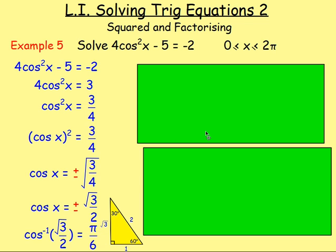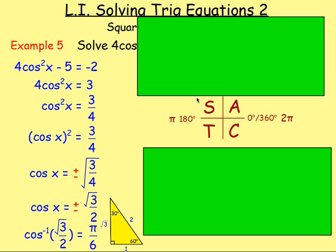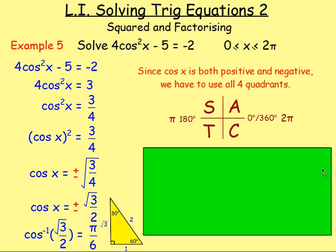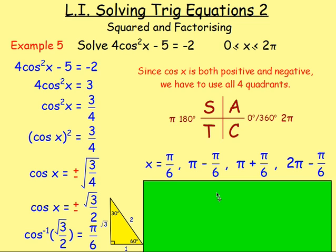After that, think about the quadrants. Because it's both the positive and the negative — positive would be A and C, negative would be S and T — so you're using all four quadrants. That means you're going to have four possible answers. Going around using CAST: first answer is pi over six; second quadrant is pi minus pi over six; third quadrant is pi plus pi over six; fourth quadrant is two pi minus pi over six.